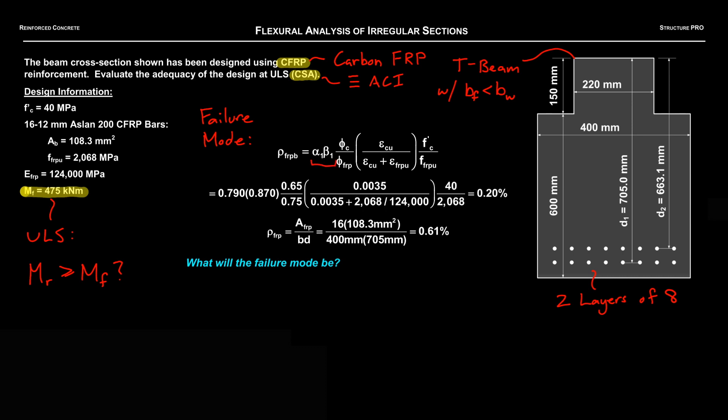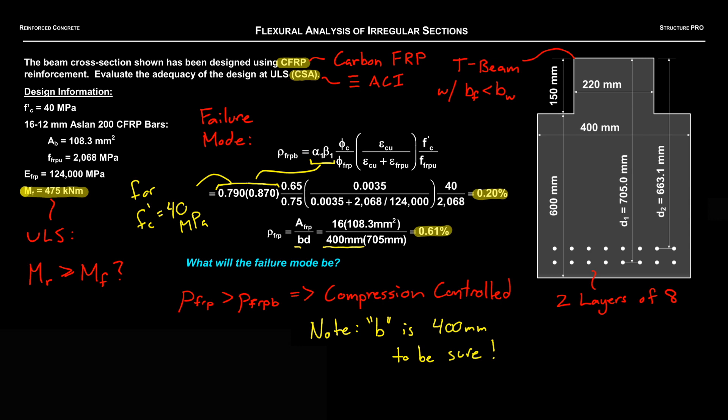Here I've shown the balanced reinforcement ratio using alpha 1 and beta 1 for the f prime c given 40 MPa. We have our balanced reinforcement ratio of 0.2 and then we have our actual reinforcement ratio of 0.61, and we note that the actual reinforcement ratio is greater than the balanced so we have a compression controlled failure. And this is key here: note that we used 400 millimeters for B, even though it's actually 220 at the top. We went with 400 just to be darn sure that this was going to be compression controlled.